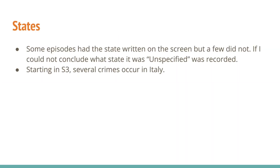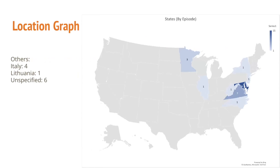Now the locations of the crimes. Some episodes had the state written on screen, but a few did not. If I could not conclude what state it was, I put 'unspecified,' and starting in season three, several crimes occur in Italy. Season one, like a lot of crime shows, would have the location pop up in the bottom corner of the screen. Seasons two and three did not do that as much, but a lot of episodes after season one had recurring locations, so that made it easy. Maryland is the highest with 15. The three in Minnesota connect back to Abigail Hobbs in season one. Illinois and New York are from Francis Dollarhyde, and the rest are just east coast.